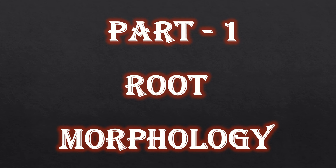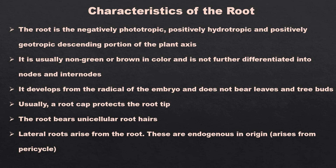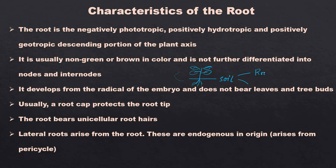Before we start, we all know that the plant axis is divided into parts — the root system and the shoot system. If this is the axis and this is the substratum, this is your soil, the part below is your root system and this one is your shoot system. So broadly, if you are dividing a plant axis, you can divide it into two parts: the root and the shoot system.